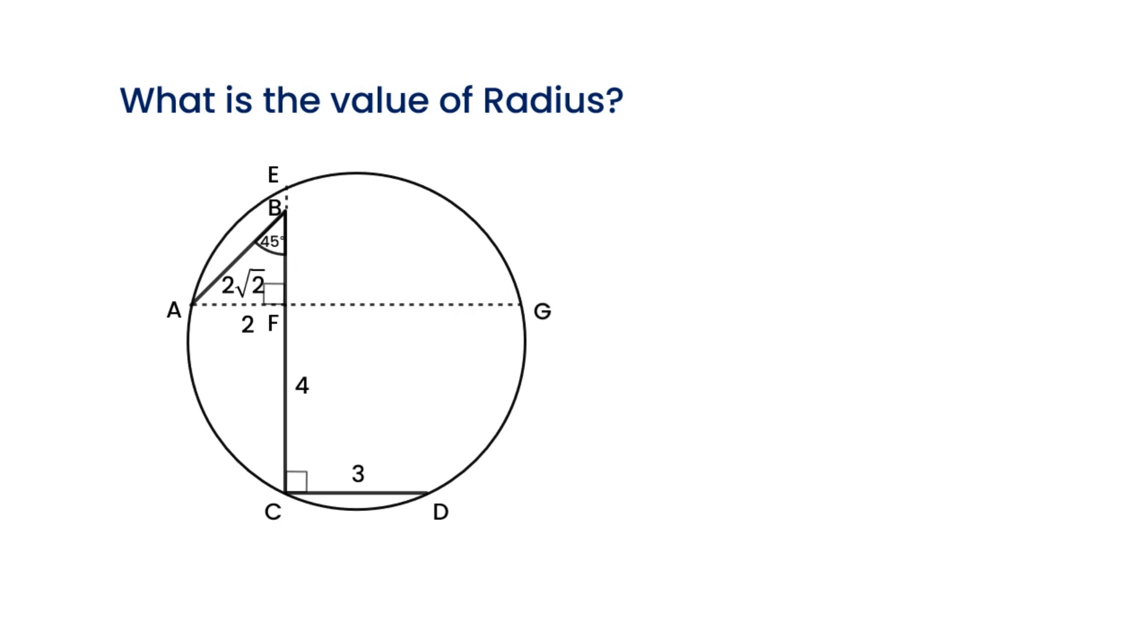Then through point D, make a perpendicular segment to AG, intersecting at point H. Let's focus on F, C, D, H. It is a rectangle. So FH equals CD, which equals 3.